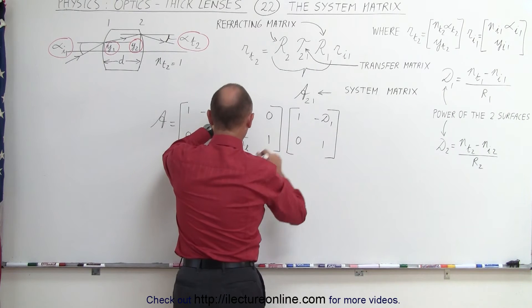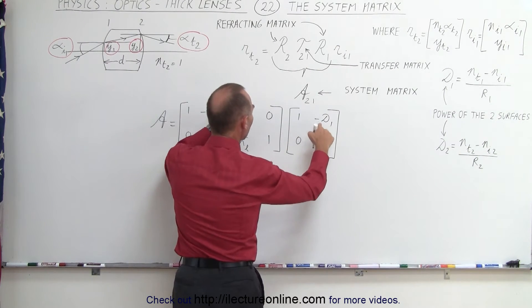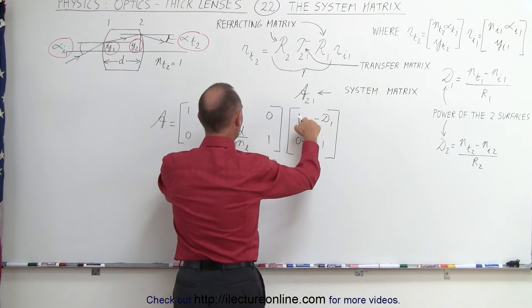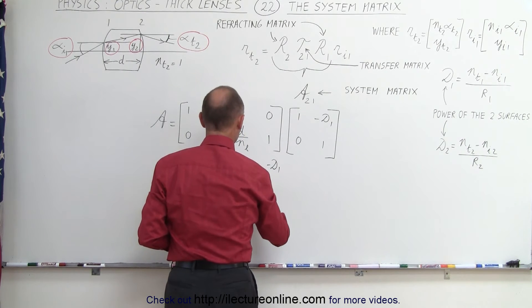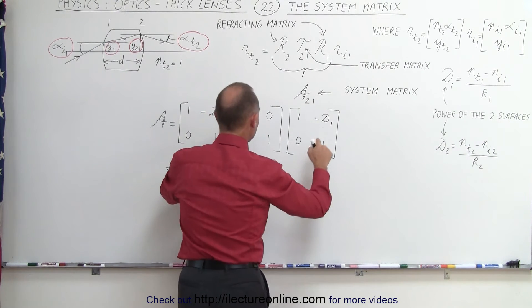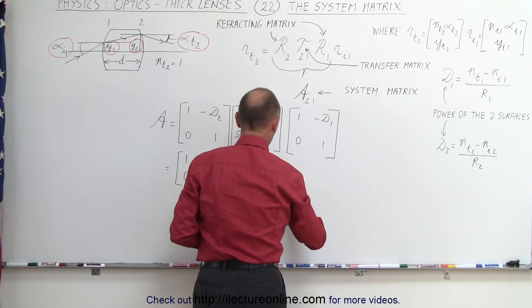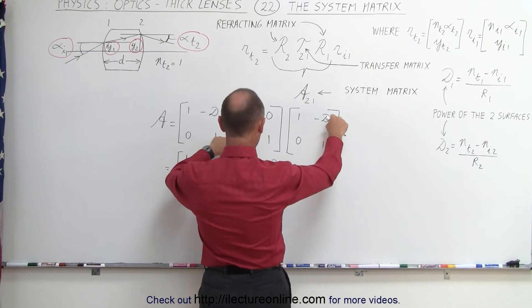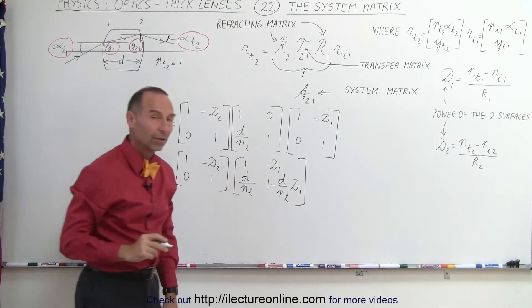We multiply these together. We have 1 times 1 plus 0. We have minus D1 plus 0. So, that would be minus D1 on this side. Here we have 1 times this plus 0. So, it would be D divided by N sub L. And here we have this times this plus 1. So, we have 1 minus D divided by the index of refraction of the lens times D1. Let's make sure we have that's correct. So, this times this plus this times this. That's correct.